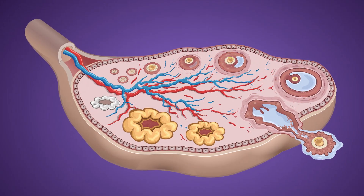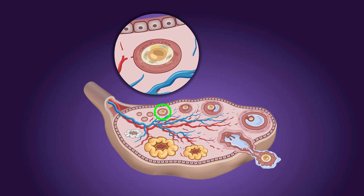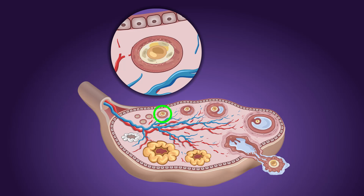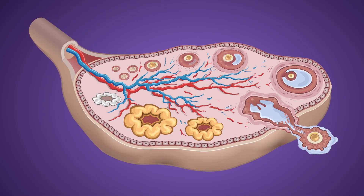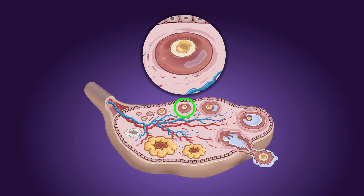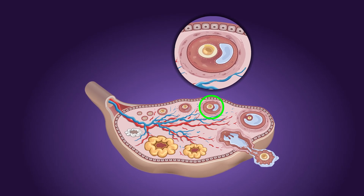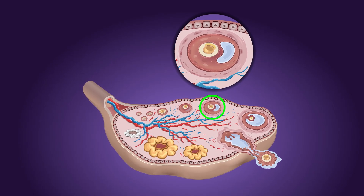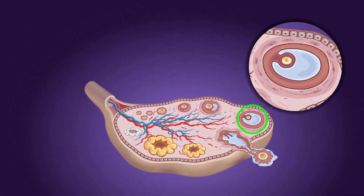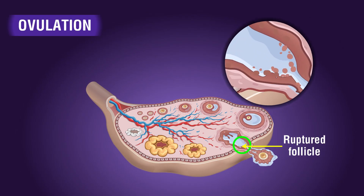The germ cells or oocytes, commonly known as primary oocytes, begin to divide and then get surrounded by a layer of granulosa cells, forming the primary follicle. These primary follicles get surrounded by more layers of granulosa cells and are called secondary follicles. The secondary follicle soon develops into a tertiary follicle, which is characterized by a fluid-filled cavity called the antrum. The tertiary follicle further changes into the mature follicle or Graafian follicle.